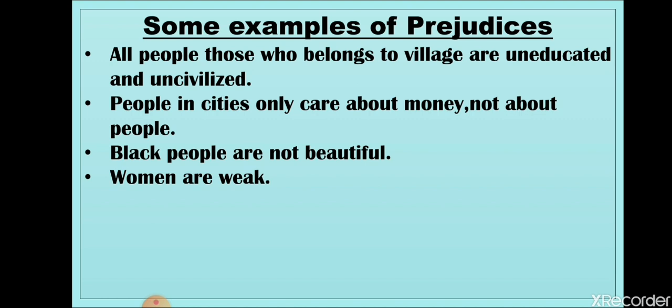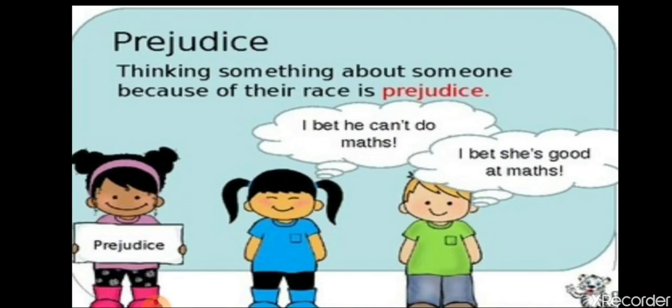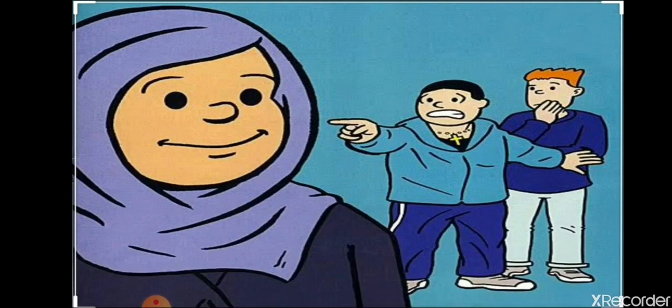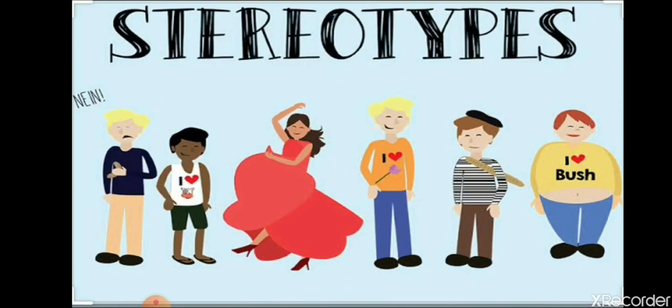We should not judge someone if we do not know them. For example: 'I bet he can't do maths' — how can you think a person cannot do maths without knowing them? This is prejudice. When we start judging a person on the basis of their religious beliefs before meeting that person, that is also an example of prejudice.